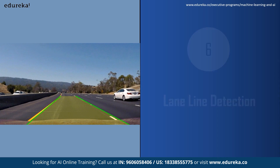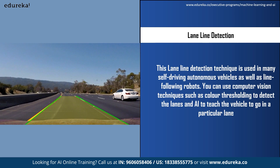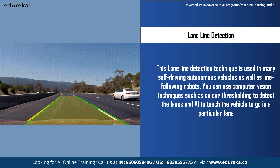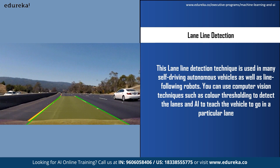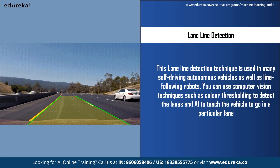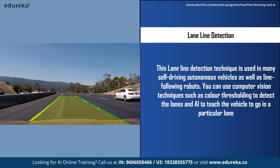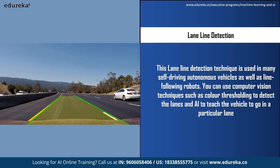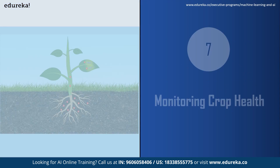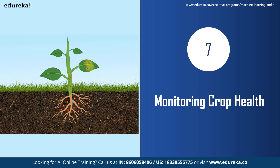The next AI project is lane line detection. Self-driving cars are gaining popularity, and while designing a full self-driving car is hard for beginners, you can design a part of it — lane line detection. This technique is used by autonomous vehicles and line-following robots. You can use computer vision techniques such as color thresholding to detect lanes, which are typically white. Double lanes separate directions in the middle of the road, and a single white line marks the road's edge.